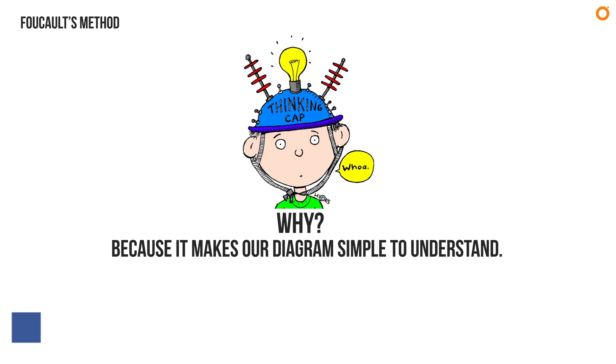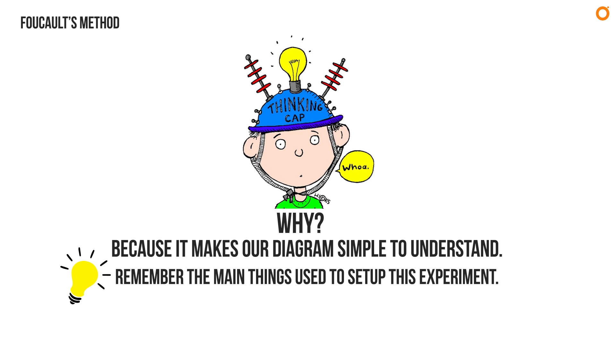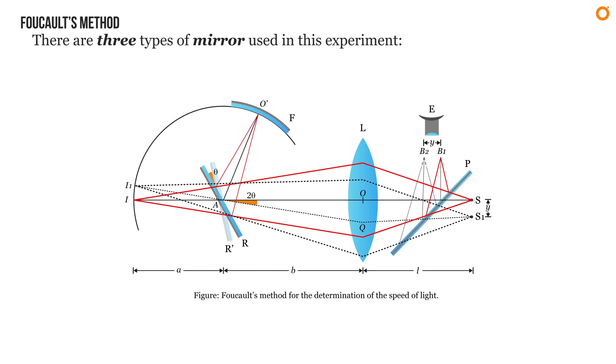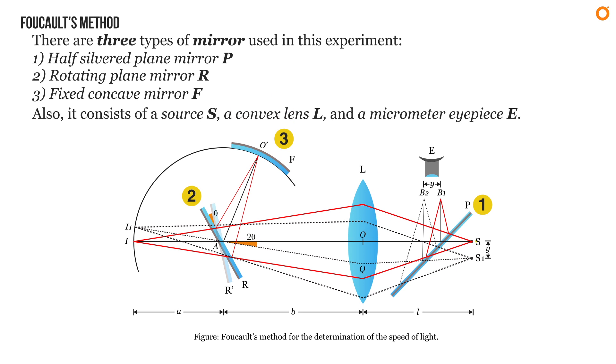Before drawing the diagram, remember the main things used to set up this experiment. There are three types of mirrors used: number one, half-silvered plane mirror P; number two, rotating plane mirror R; and number three, fixed concave mirror F. Also it consists of a source S, a convex lens L, and a micrometer eyepiece E.